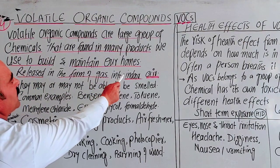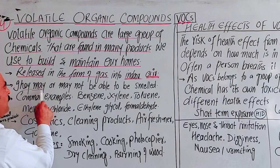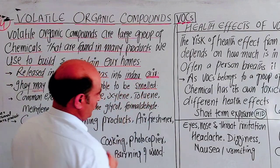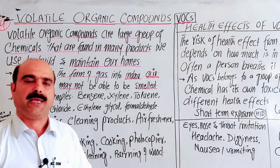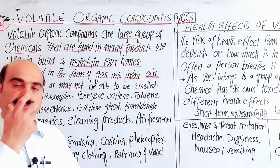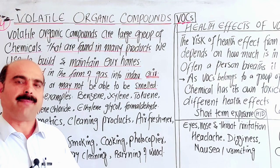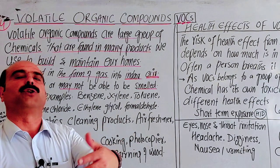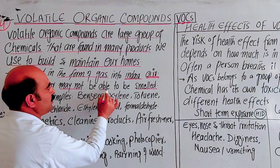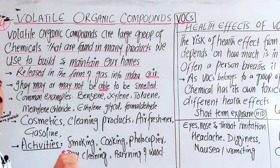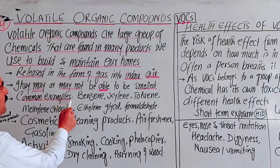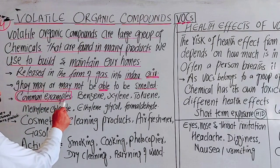They are released in the form of gas into the indoor air. An important point: they may or may not be able to be smelled. For example, air freshener in a room — you can smell it. Perfume — you can smell it. But some chemicals release into the air and cannot be smelled at all. So the smell is not always an indicator of their presence.